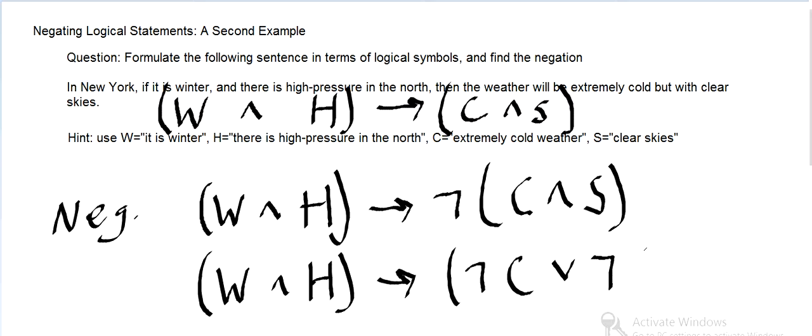So, at least one of the two must not hold. So, that's using De Morgan. And this is supposed to be a not. Great. Hope that makes sense. Let me know if you have any questions, and good day.